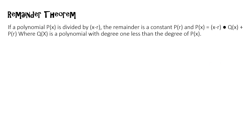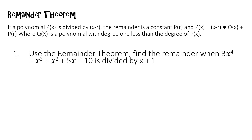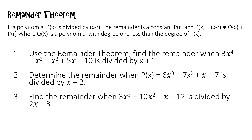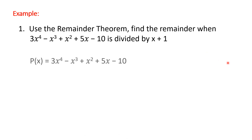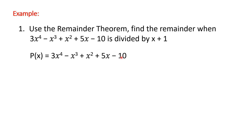With this theorem, we will be discussing three examples. For example number one, we will use the remainder theorem to find the remainder given that the polynomial function is 3x⁴ - x³ + x² + 5x - 10, divided by (x + 1). So first, write the polynomial given, with our divisor being (x + 1).